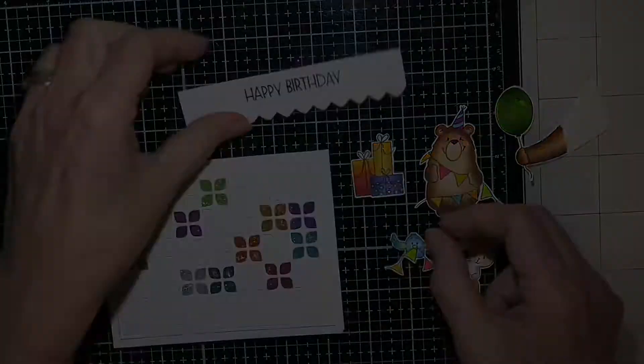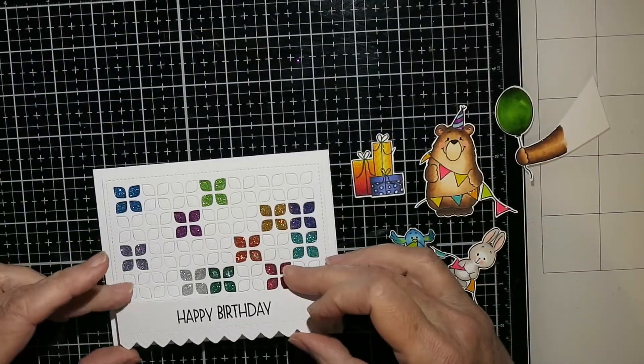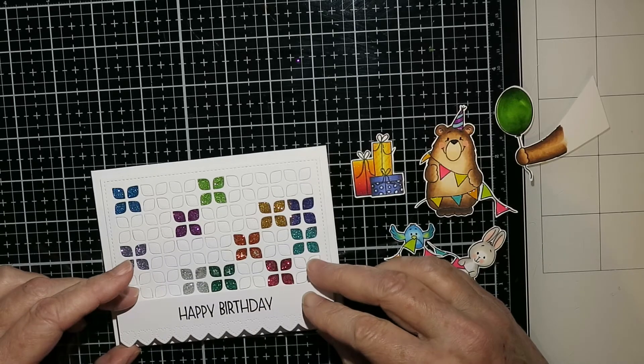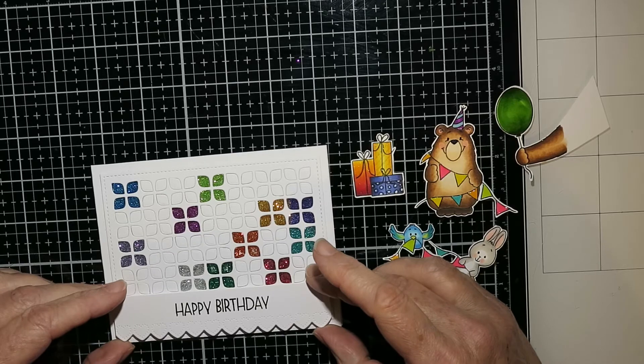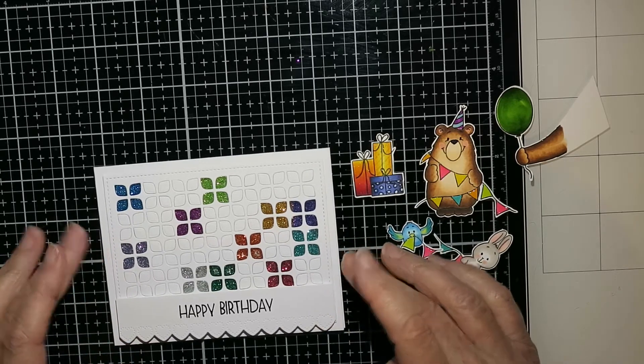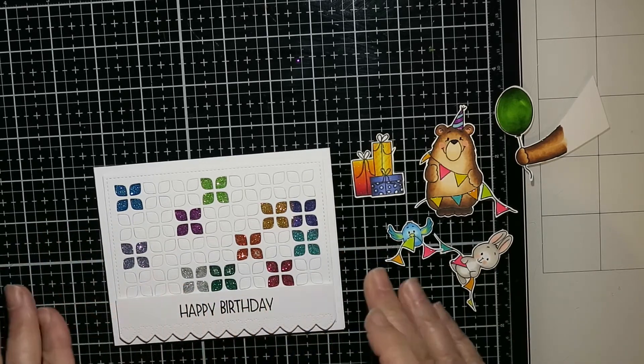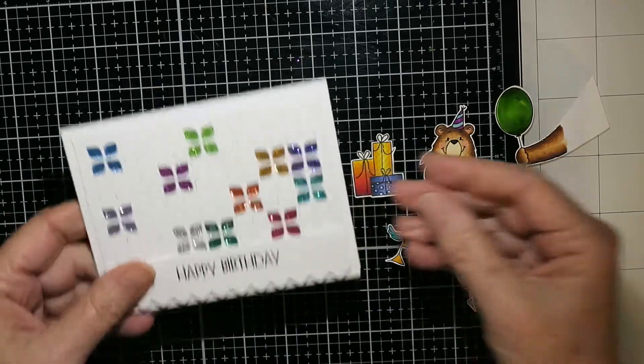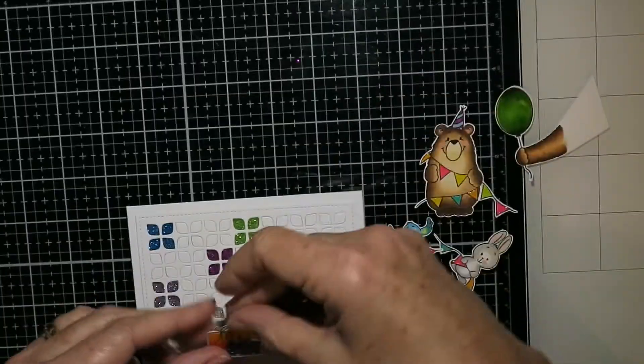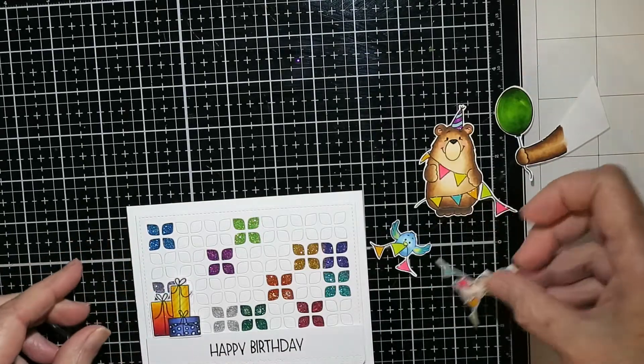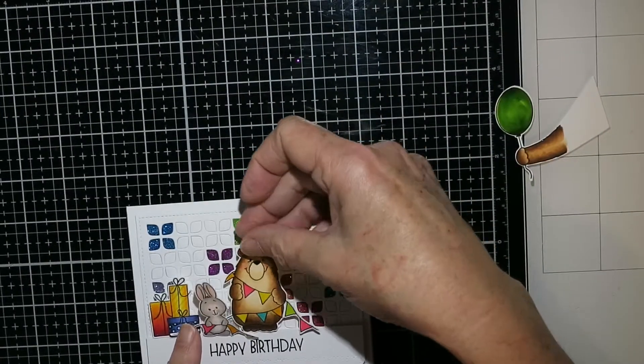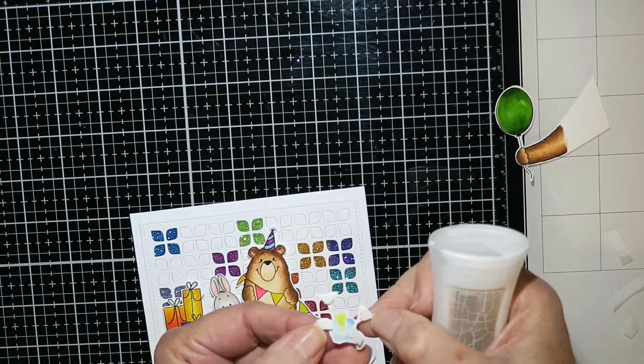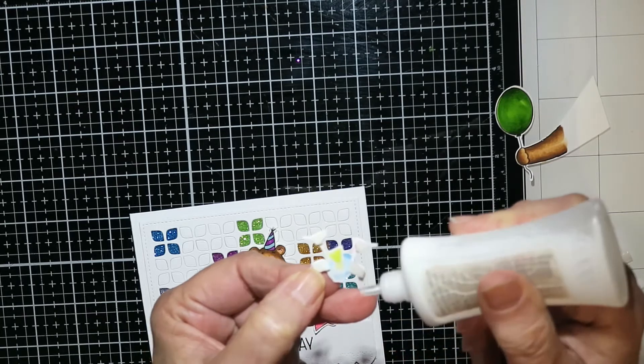I've colored up all my images as you can see here and I used some glossy accents on the banners, the bear's hat and the balloon. Before I decided which of those petals to put glitter on I had sort of positioned my images around in this pattern that I'm going to do now. I kind of chose petals that would stand out behind the images just to give a bit of interest. So I'm adhering it all down now.